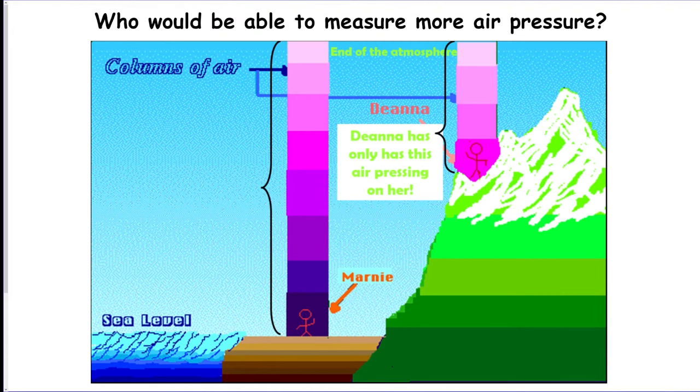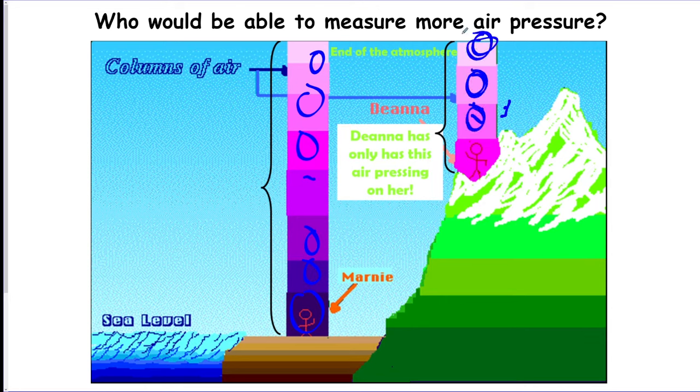So if you look at this picture here, there's a person, Marnie, on the surface over here. And there is a person, Briette Deanna, over here on the top of the mountain. So which one has more air on top of them? So you could see Marnie has all these blocks, right? And Deanna only has three areas of air.